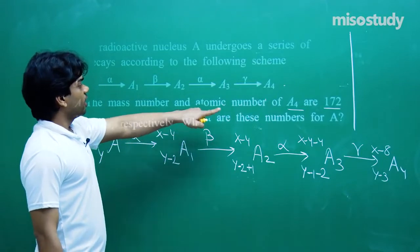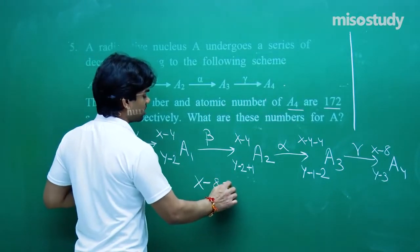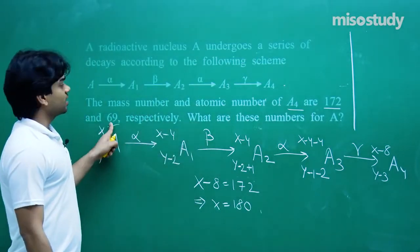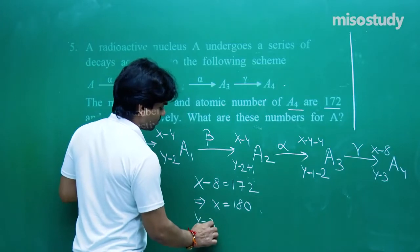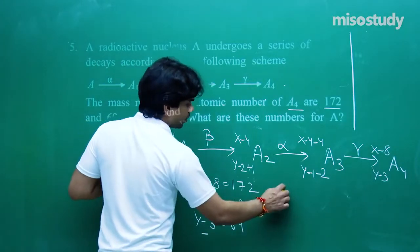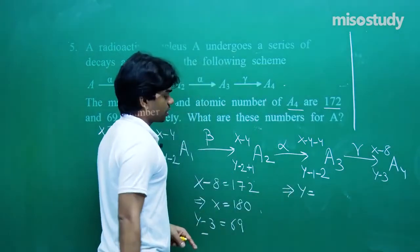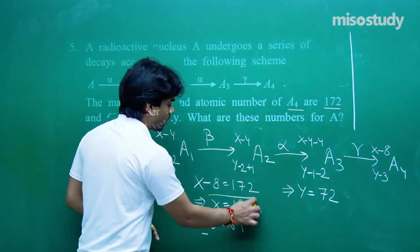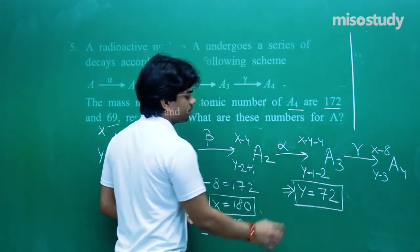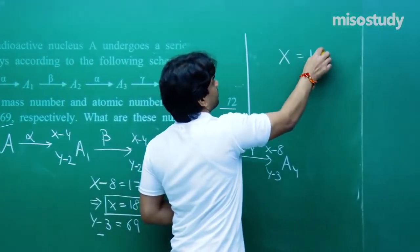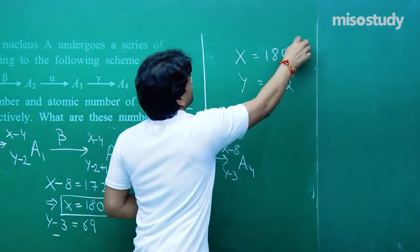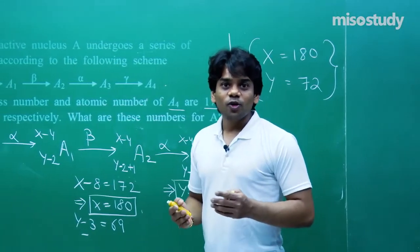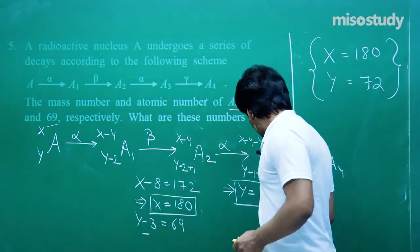After all decays, A4 has mass number X minus 8 and atomic number Y minus 3. Given A4 has mass number 172: X minus 8 equals 172, so X equals 180. Given atomic number 69: Y minus 3 equals 69, so Y equals 72. Therefore, for nucleus A, mass number is 180 and atomic number is 72. If you are thorough with what happens to mass number and atomic number in each type of decay, you can easily reach this result.